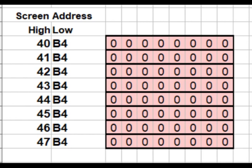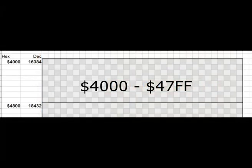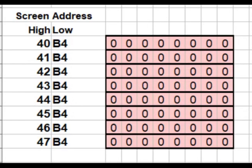Looking at the high byte: this segment contains addresses from 0x4000 to 0x47FF. The high byte for each line within the square is linear — going from 0x40 at the top to 0x47 at the bottom: 0x40, 0x41, 0x42, and so on. So as we move down within a single character square, the high byte increases by 1 each time — that's 8 bytes.